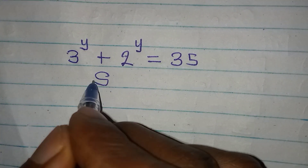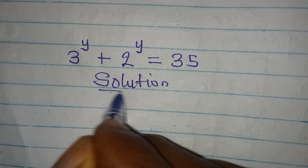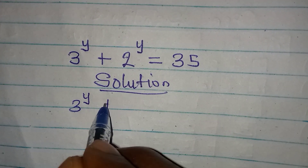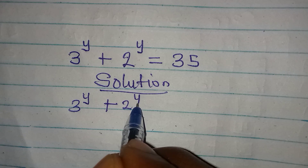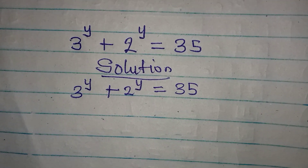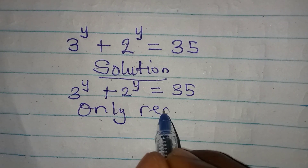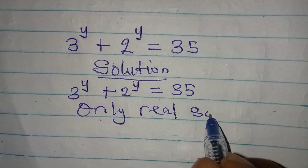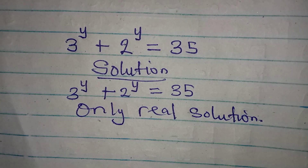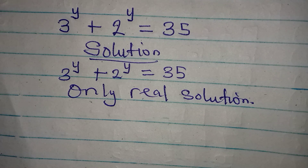Hello everyone, let's provide a solution to this problem very quickly. We have 3 to the power of y plus 2 to the power of y equals 35. We are looking for only the real solution — but how do we deal with this?